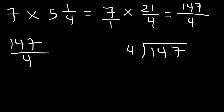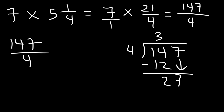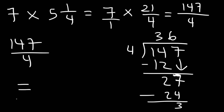Convert 147 over 4 to a mixed number using long division. 4 goes into 14 three times; 4 times 3 is 12, remainder 2. Bring down the 7 to get 27. 4 goes into 27 six times; 4 times 6 is 24, remainder 3. So the final answer is 36 and three-fourths.